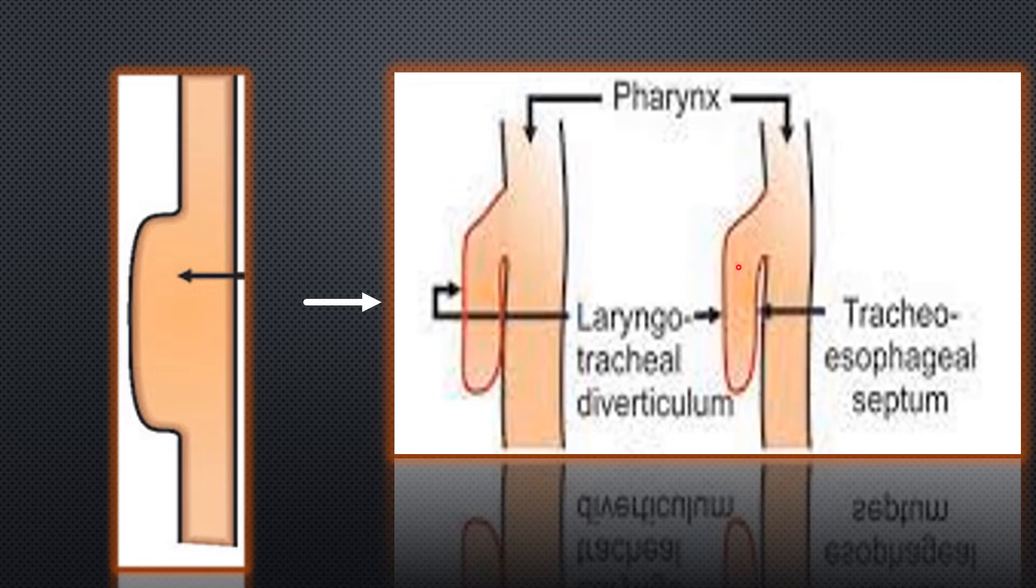This laryngotracheal tube is connected towards the cephalic part, and this point we can say is the furcula. Towards the cephalic, it is connected to the pharynx. This tracheoesophageal septum is going to separate the trachea from the esophagus.